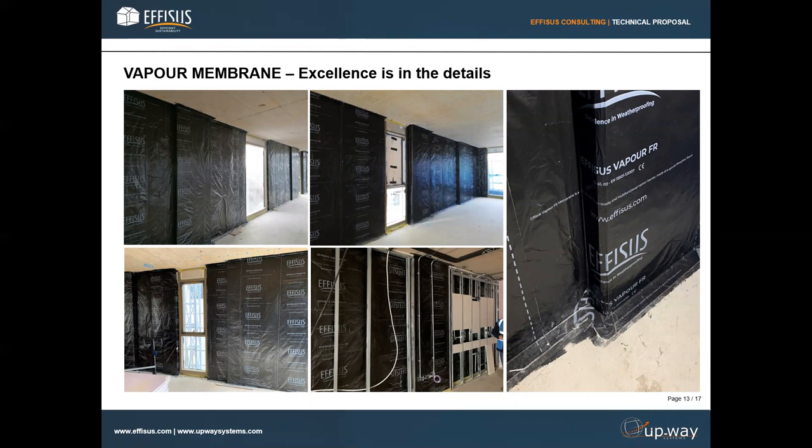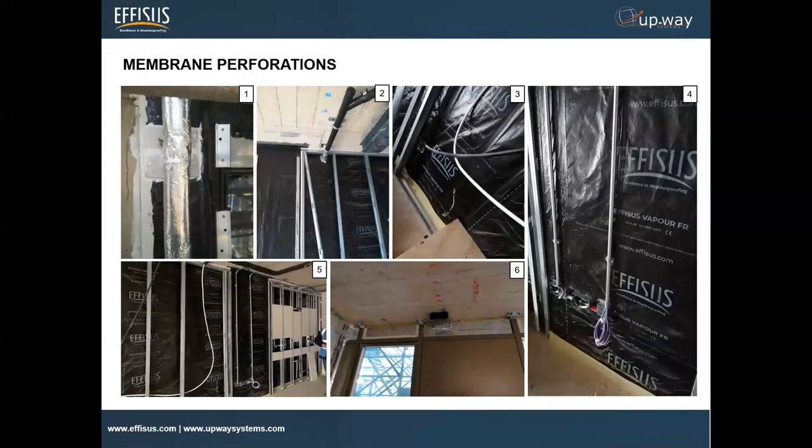Here you can see an example of an installation where we applied Vapor FR in a project in London. We go into detail in terms of how to apply the product, the best accessories for different substrates, compatibility, and all the items mentioned previously. I'd like to highlight membrane perforations, which is something we really pay attention to. We have six different situations at site — MEP perforations, electrical sockets, plumbing, and many other perforations you can find on site.